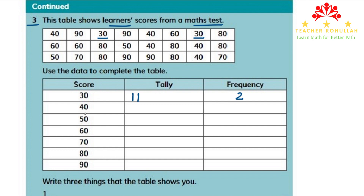To find students who scored 40, we look through each row again. We find a group of 5 and then 1 more, giving us 5 students. So I write 5 in the frequency table — 5 students scored 40.